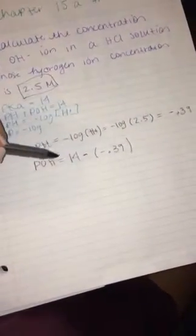The reason I got that is because I used the formula pH plus pOH equals 14. Right now we know that our pH is negative 0.39, so our pOH has to be 14 minus our pH. That gives us 14.39 if you put it in your calculator.